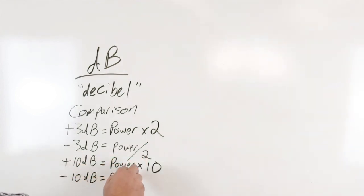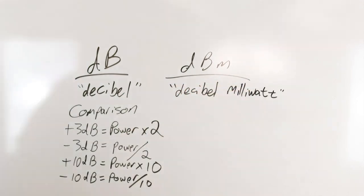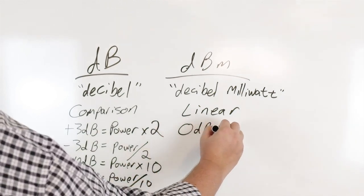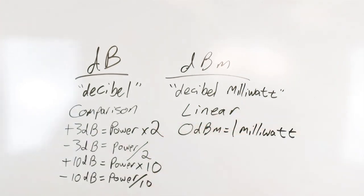dBm or decibel milliwatts is used when the signal strength is known or properly calculated. Many times these terms are used interchangeably to report an increase or decrease in signal strength.